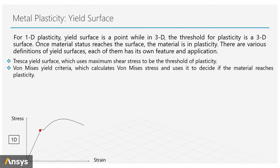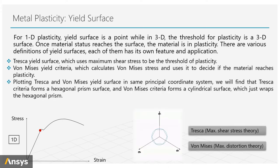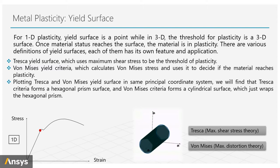There are various definitions of yield surfaces, each with its own feature and application. For example, Tresca yield criterion uses maximum shear stress as the threshold of plasticity, or Von Mises yield criterion, which calculates Von Mises stress and uses it to decide the status of the material. Von Mises criterion is widely used for metal materials.